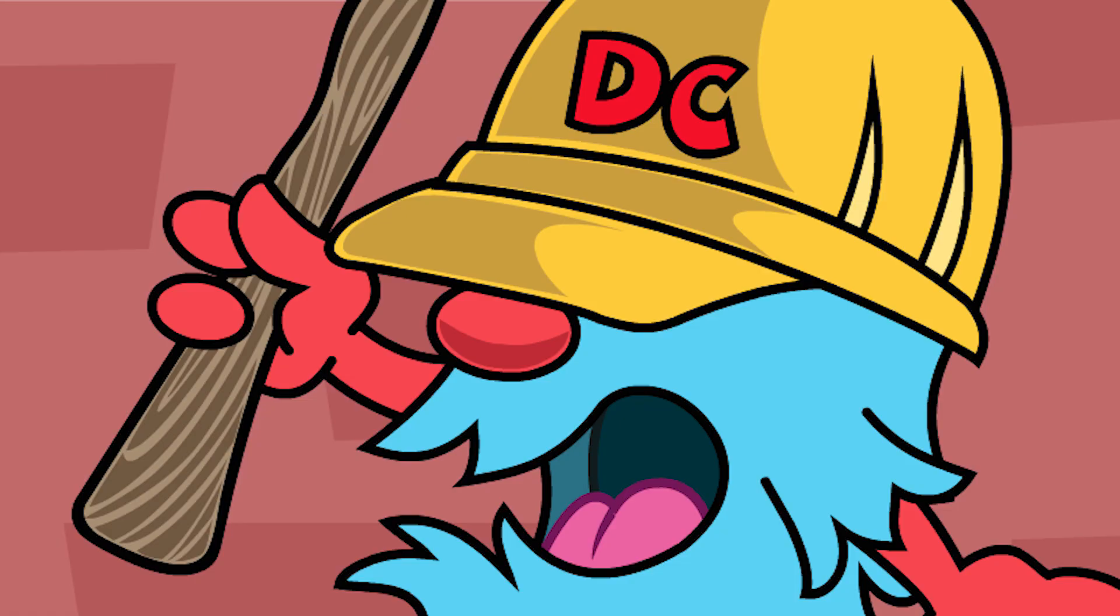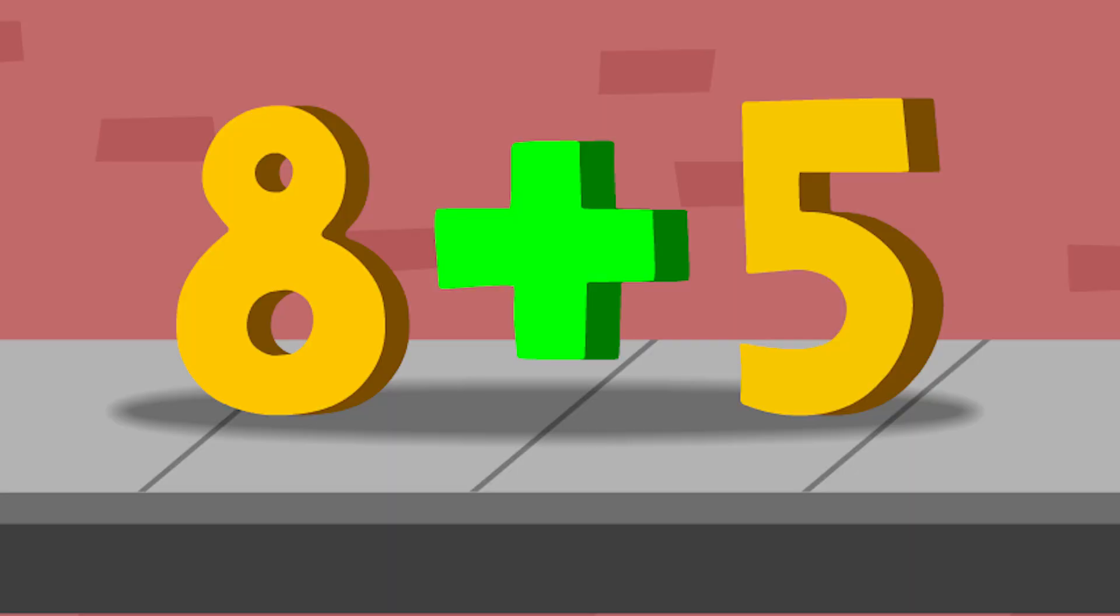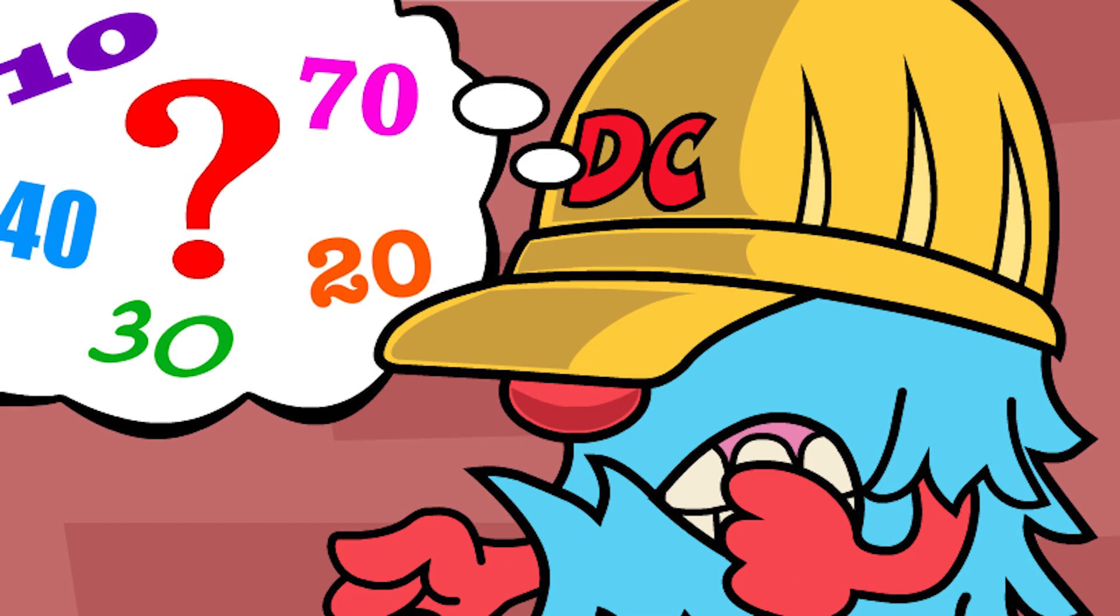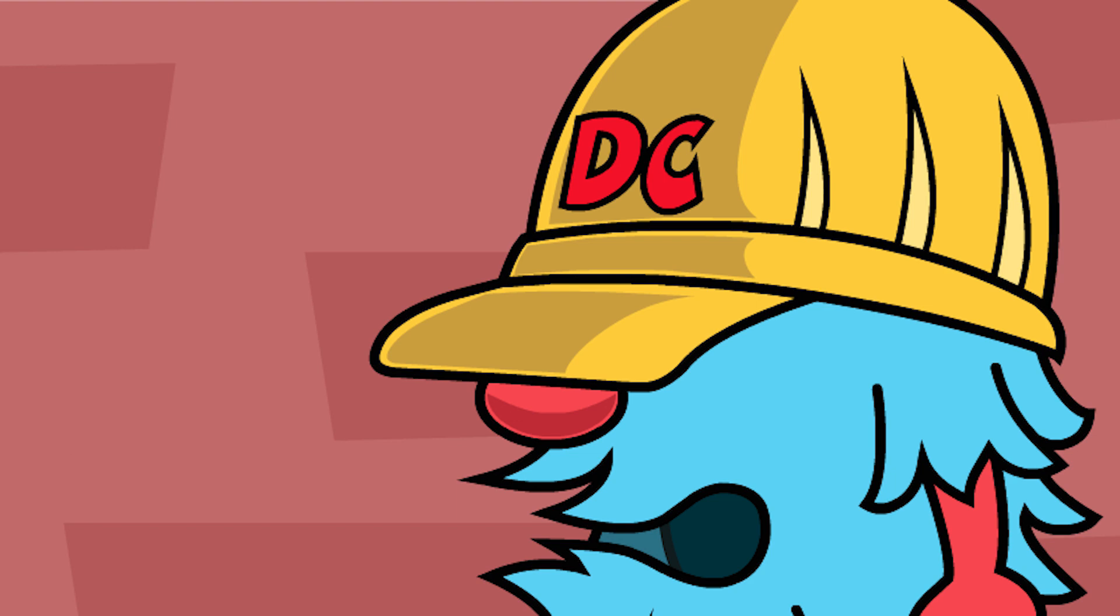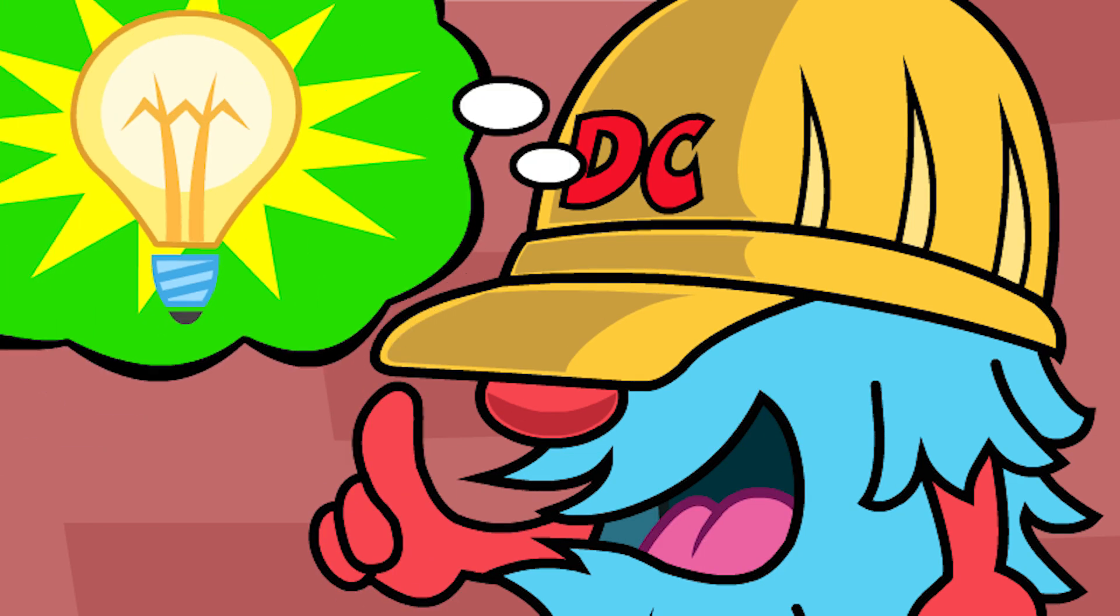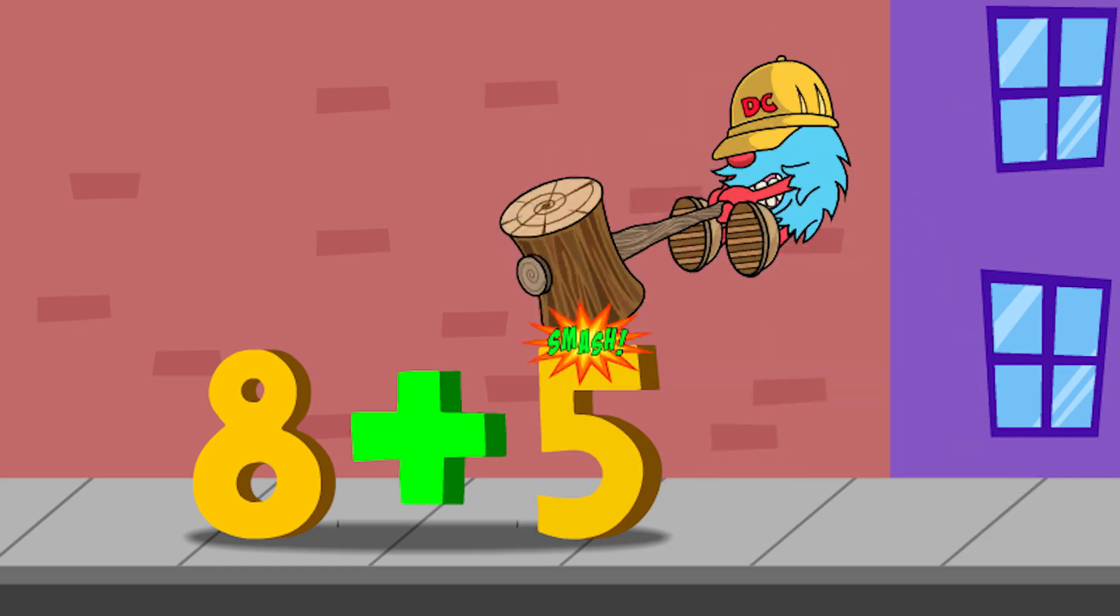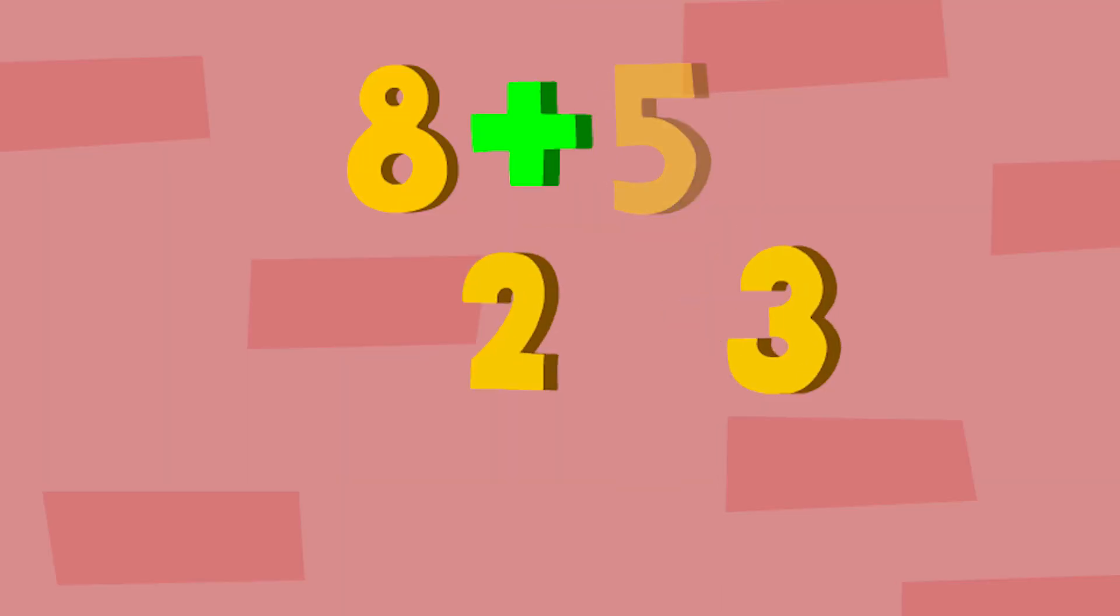Watch out, D.C., 8 plus 5. These two numbers are not friendly to add. D.C. is thinking about his friendly numbers and trying to figure out what he might do. He has an idea. He's going to take his mallet and he's going to smash the number 5 and decompose it into 2 and 3.